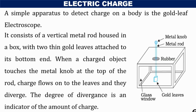Let us consider a simple apparatus to detect the presence of charge on a body. This instrument is known as the Gold Leaf Electroscope. It has an evacuated glass chamber, with a metal rod inserted half inside and half outside. On the outside portion, it is connected to a metal knob, and inside there are gold leaves.